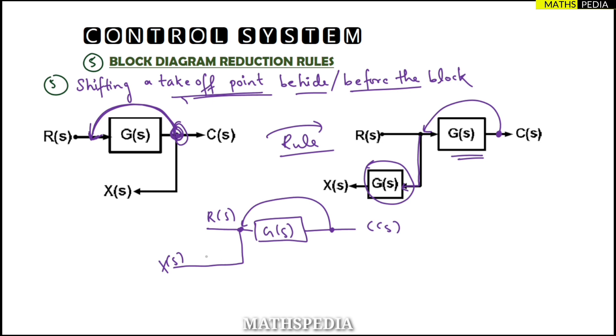You have to add one block in series to this signal which is having the same transfer function as this block which you have jumped. Since you jumped from this to this place, in between you had this block. Whatever the block's transfer function, that same block you have to copy paste over here.